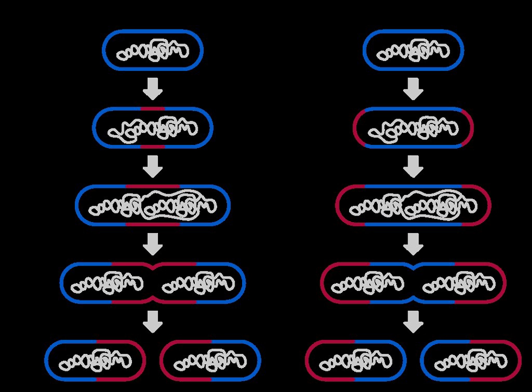Some protozoans reproduce by yet another mechanism of fission called plasmotomy. In this type of fission, a multinucleate adult parent undergoes cytokinesis to form two multinucleate daughter cells. The daughter cells so produced undergo karyokinesis further. Such a type of reproduction is shown by opalina and pelomyxia.